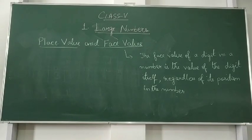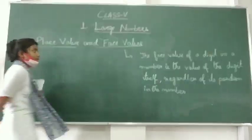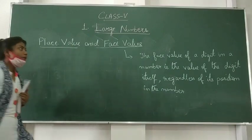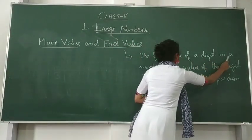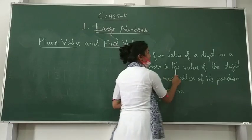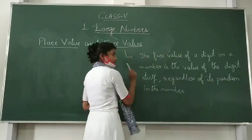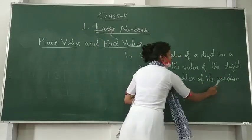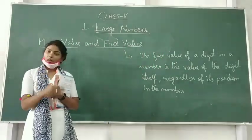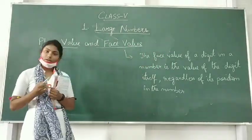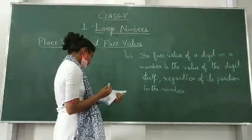Now we will learn about place value and face value. What are these two terms? The face value of a digit in a number is the value of the digit itself, regardless of its position in the number. With the help of an example, let us see what is face value and place value.